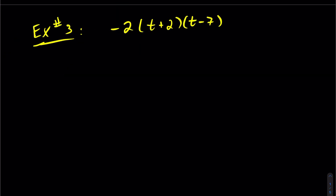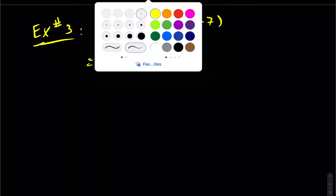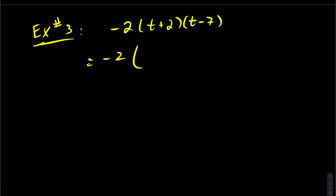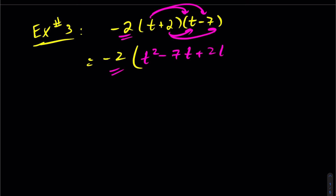Let's take a look at example 3. There's a constant term in front, so typically what you do is put that constant term out in front and ignore it — take care of the inside first, take care of your multiplication, and save the constant for the very end. So we go ahead and do our distribution, and we get t squared minus 7t plus 2t minus 14. Don't distribute the constant now — save that to the end. The reason is if you distributed now, you'd have to distribute to four terms, but we have two like terms we can simplify first.